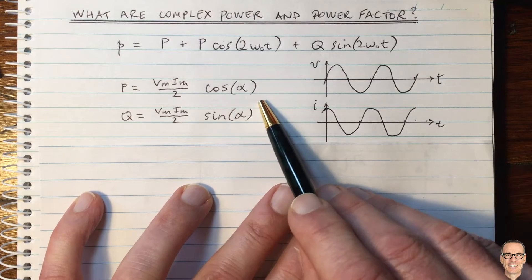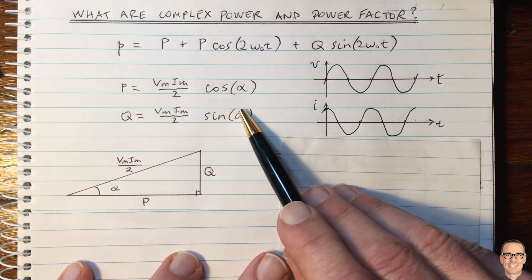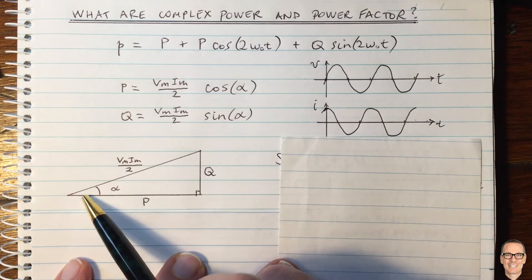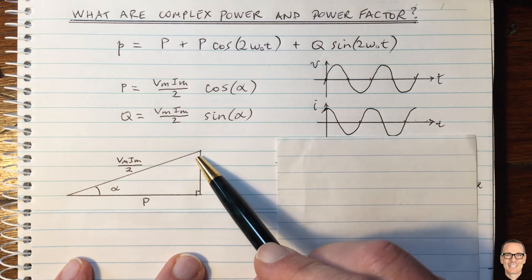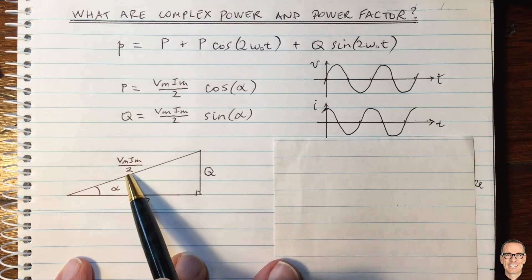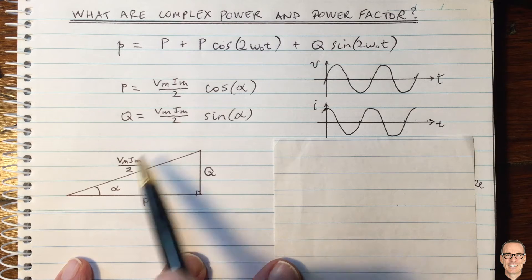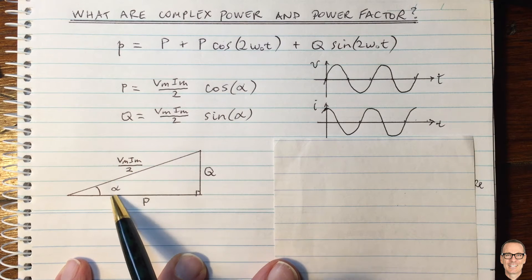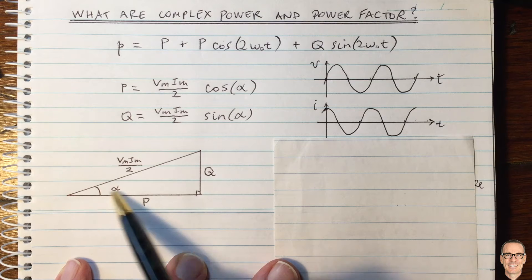you can see with some high school trigonometry that you can represent them with a triangle. So here we have V_m I_m over 2, that's just this one here. If you take the cos of that, then it is this length here, P.